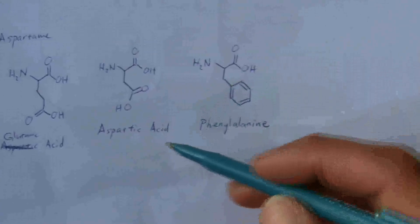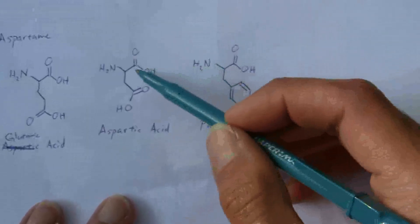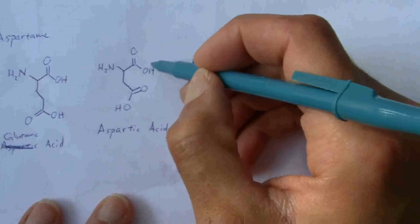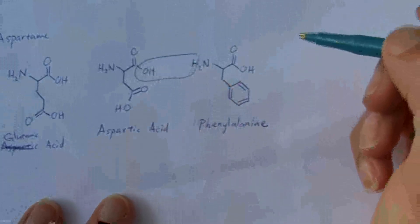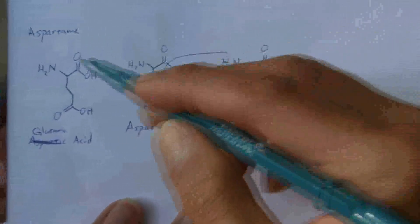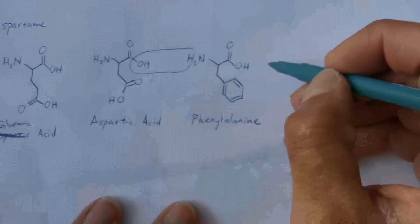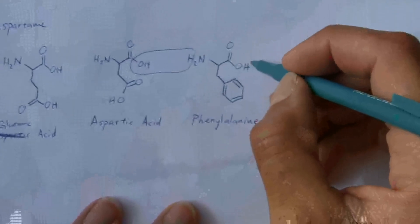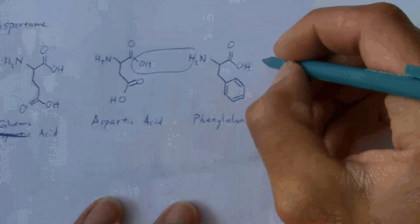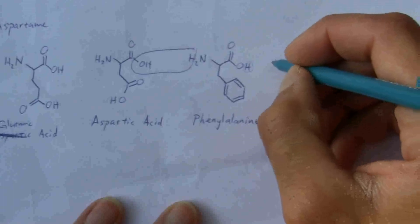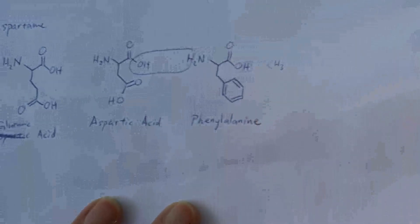So these two, when we hook them together with a condensation reaction, you get almost aspartame. There's one other difference, and that is we take this OH and we replace it with a CH3 group.